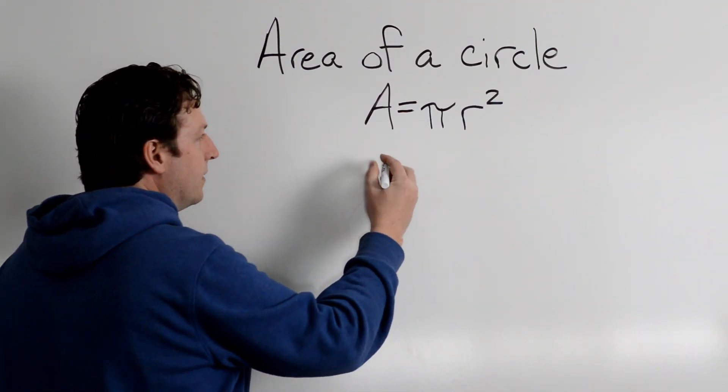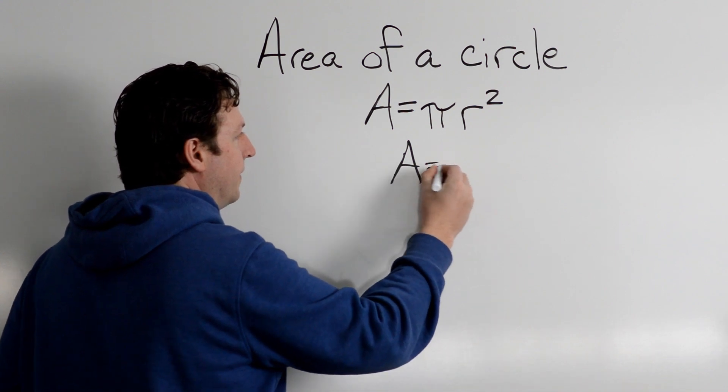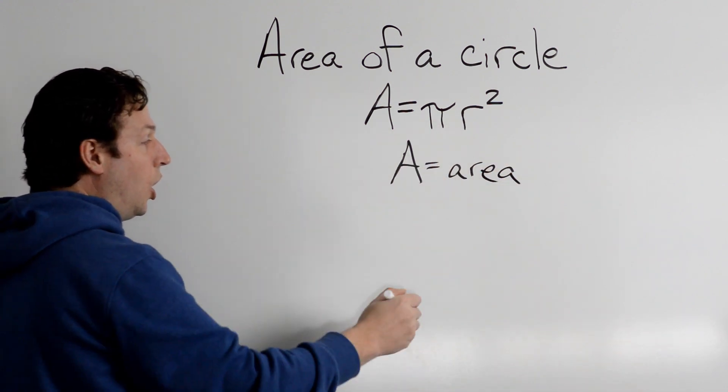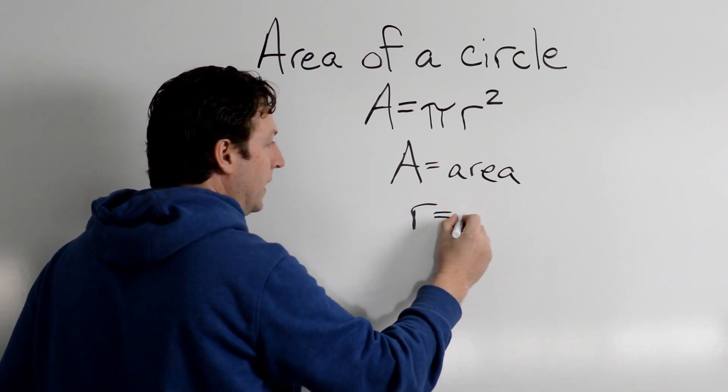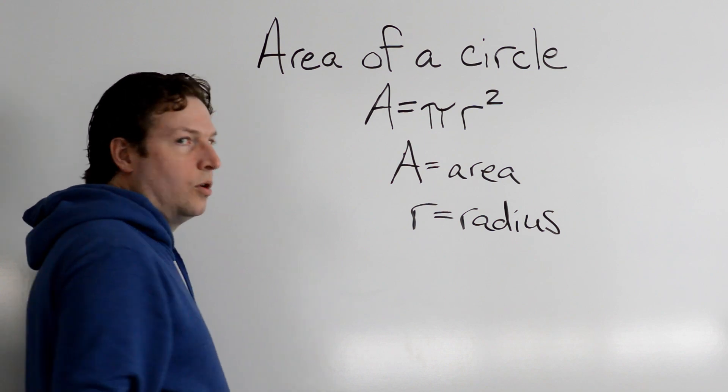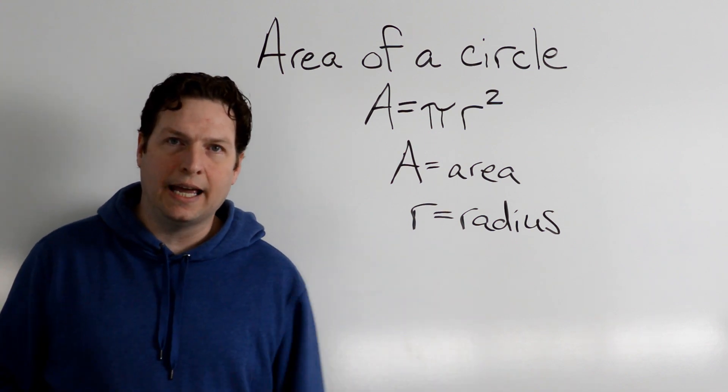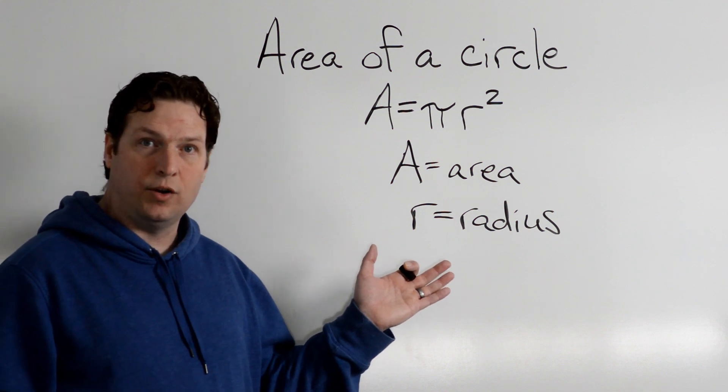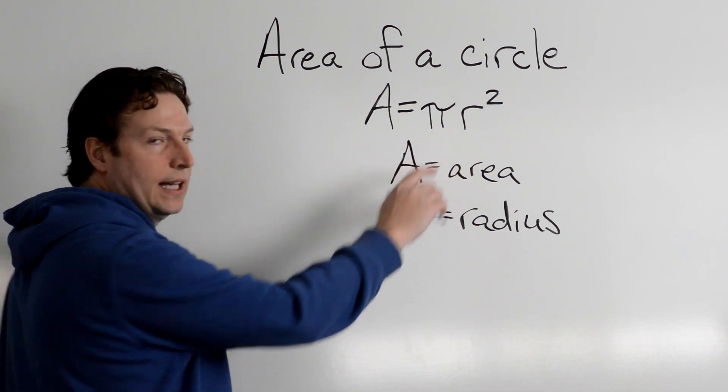A is the area of the circle, r is the radius, or half of the diameter. So radius or diameter, and we can find the area.